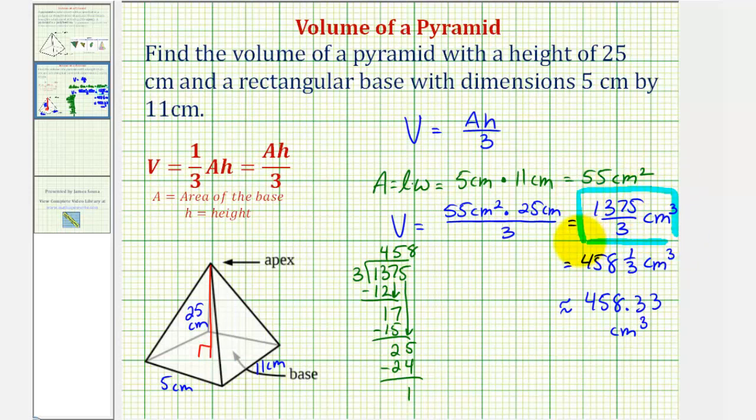But of course, this answer is also equivalent, just in a different form. This is a mixed number. Just keep in mind this value here is an approximation to two decimal places.